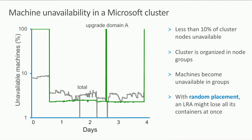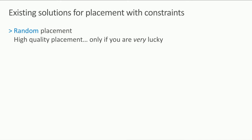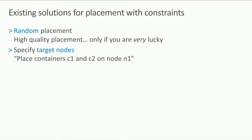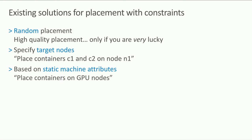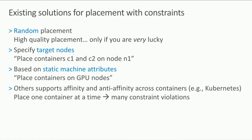Looking at existing solutions for placement with constraints: random placement gives high-quality results only if you're extremely lucky. Specifying target nodes gives some type of affinity — placing containers on a specific node. Static machine attributes let you target machines with GPUs, for example. More recently, Kubernetes added support for affinity and anti-affinity across containers, but it places one container at a time, leading to many constraint violations and poor placement quality.